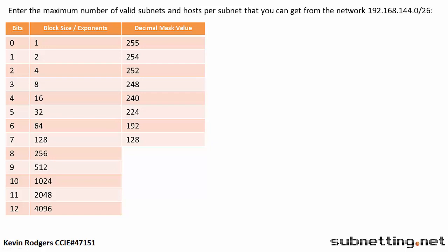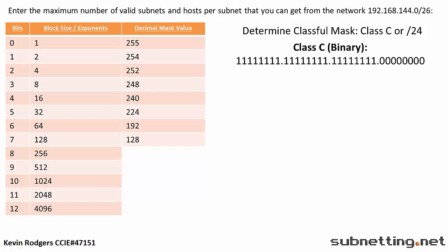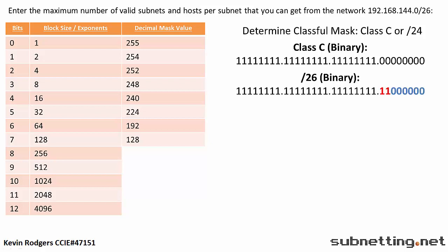The first thing we have to determine is the classful mask. In this case, it is a Class C. It can be helpful, when you are still learning, to write out the Class C default mask in binary, and the new mask — in this case, slash 26 — in binary as well. Since we are going from a slash 24 to a slash 26, we are only interested in the fourth octet.